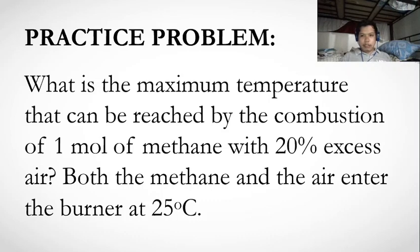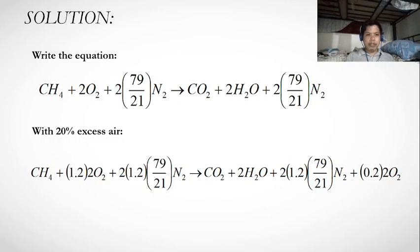We have a combustion reaction: methane plus oxygen yields carbon dioxide plus water. For the complete balanced equation, CH₄ + 2O₂ yields CO₂ + 2H₂O. With the addition of nitrogen gas from the air, since nitrogen is inert, the amount of nitrogen at the inlet will be the same as at the outlet.